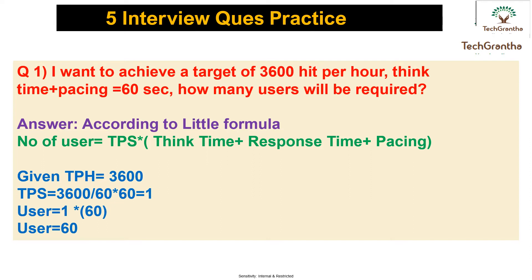The first question: suppose you want to achieve 3,600 hits per hour, and the think time and pacing value are given — we need to find out the number of users. This is a very common question that interview panels ask under workload modeling. The formula is: number of users equals transactions per second multiplied by think time plus response time plus pacing. The response time here is the end-to-end response time from start to end.